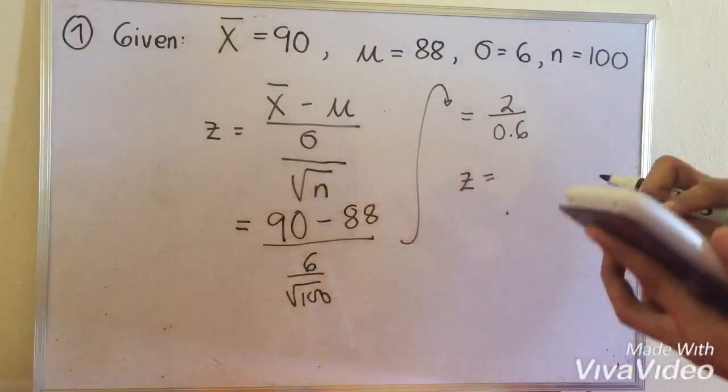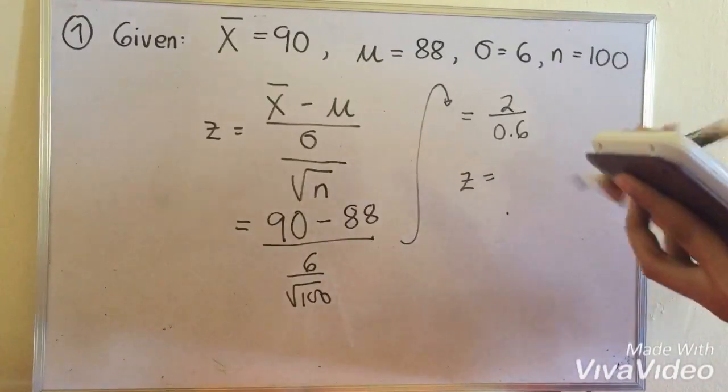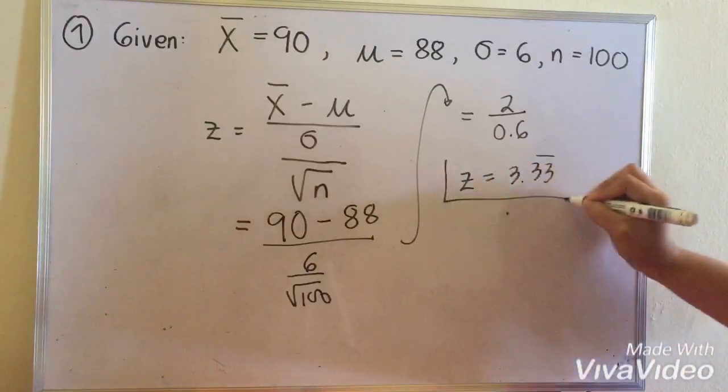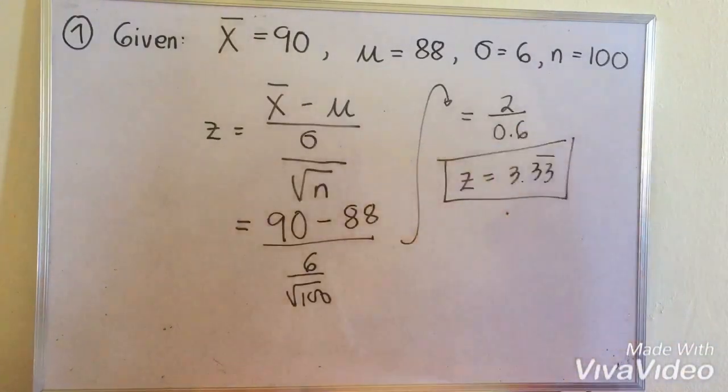That is 0.6. So the value of our Z is 3.33 repeating. This is the value of our test statistic Z.